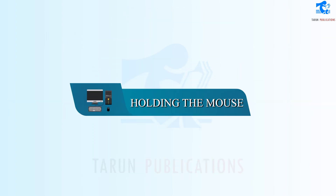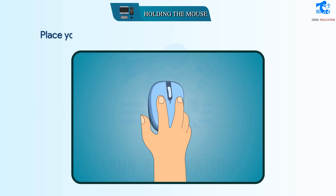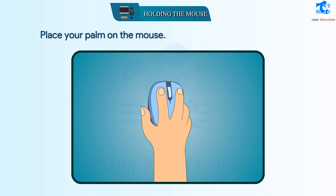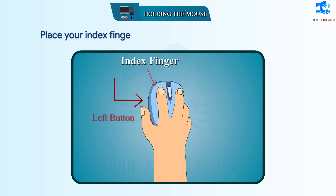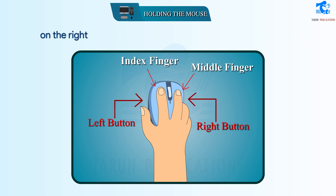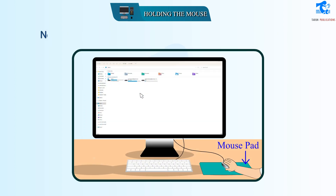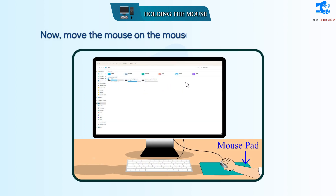Holding the Mouse. Place your palm on the mouse. Place your index finger on the left button and your middle finger on the right button. Now move the mouse on the mouse pad.